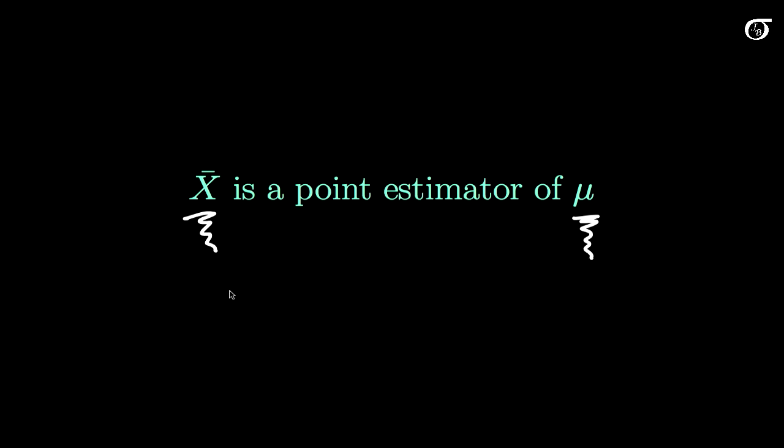We call it a point estimator because it eventually takes on a value like 13.4, and that gives a single value that provides an estimator of μ. Now, in the world of statistics we don't feel these single values, these point estimators are all that hugely useful without some measure of the uncertainty associated with that value.